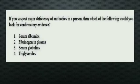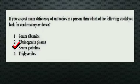Our first question is: If you suspect a major deficiency of antibodies in a person, which of the following would you look for as confirmatory evidence? The options are Serum albumin, Fibrinogen in plasma, Serum globulin, and Triglycerides. The right answer is Option 3, Serum globulin.